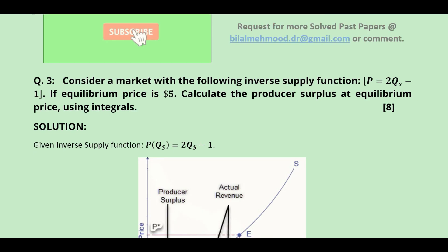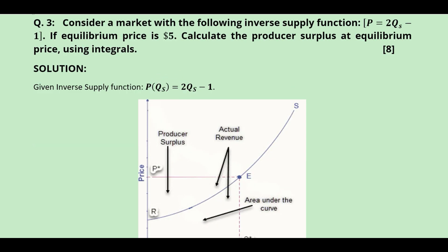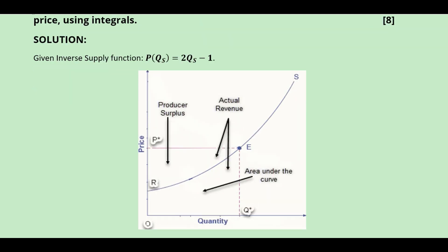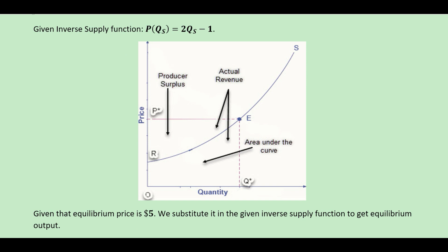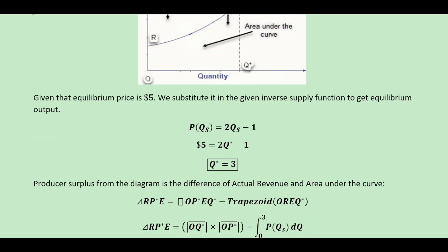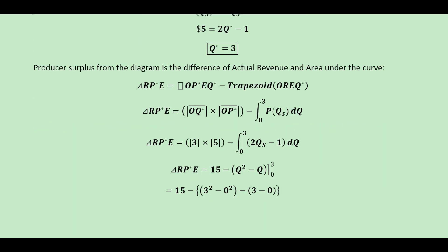The next question is about producer surplus. The inverse supply function is given along with the price. We find the equilibrium output by substituting price = 5 into the function. A diagram is drawn to visualize the situation: producer surplus equals the rectangle minus the area under the supply curve (the trapezoid). Using the given price, equilibrium output comes out to be 3.